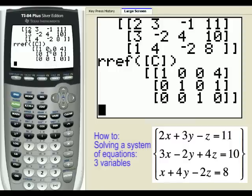Here we get what looks kind of like a 3 by 3 identity matrix. But here again are the answers. 4 would be for x, 1 would be for y, and 0 would be for z.